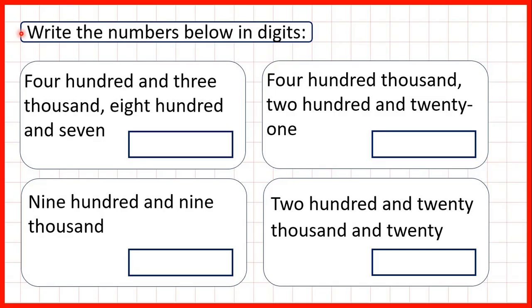We need to write the numbers below in digits. So first we have 403,807. The way to write numbers in digits is to stop when we see the word thousand. So we have 403,000.